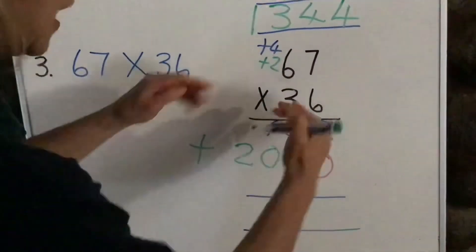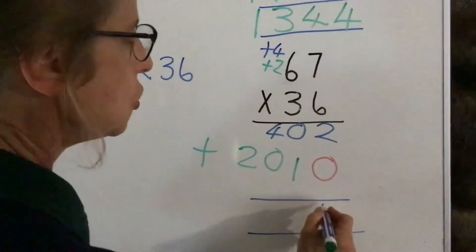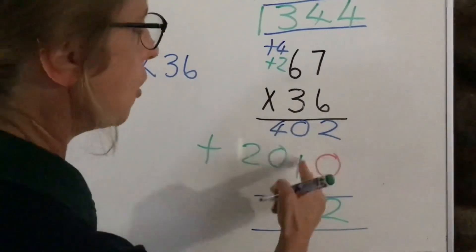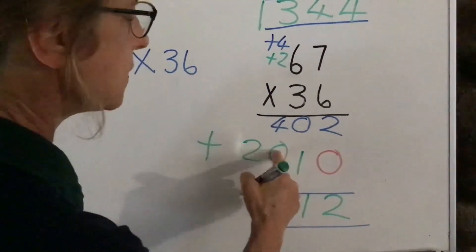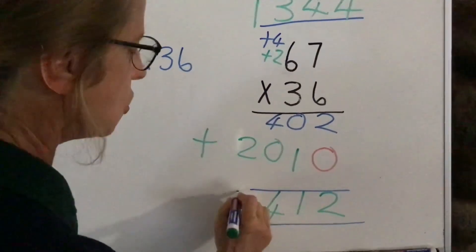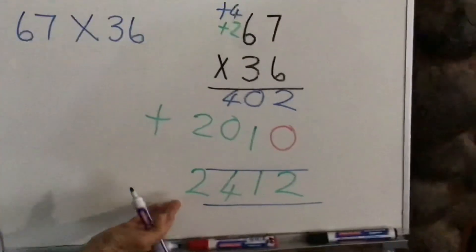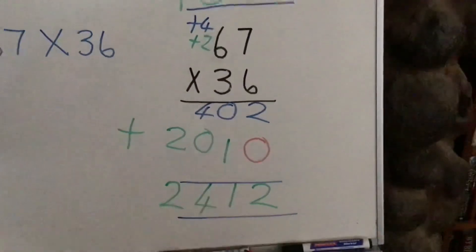Now, all that we have to do now is add up our two rows. Two plus zero is two. Zero plus one is one. Four plus zero is four. And two plus nothing is two. And there we have our answer, 2,412.